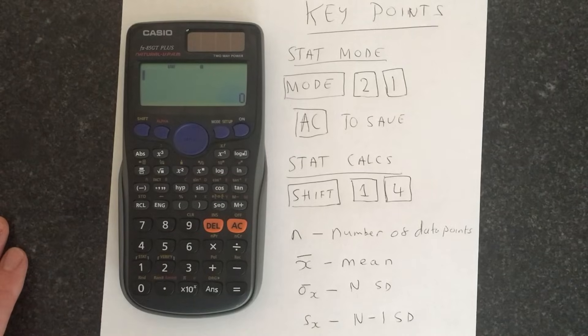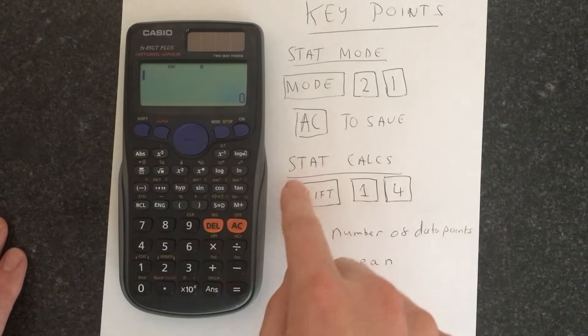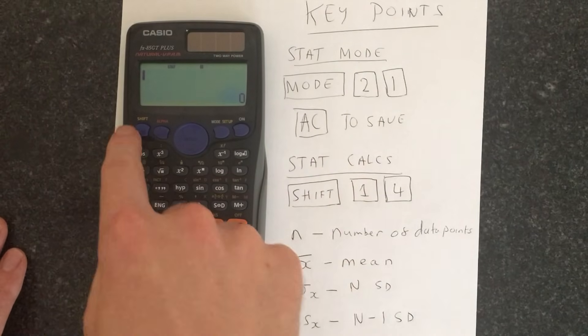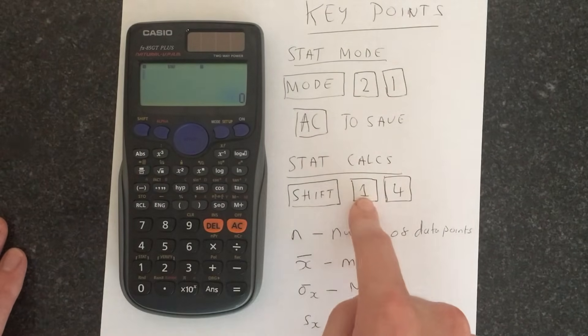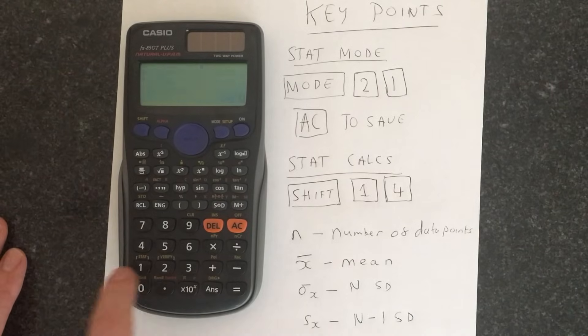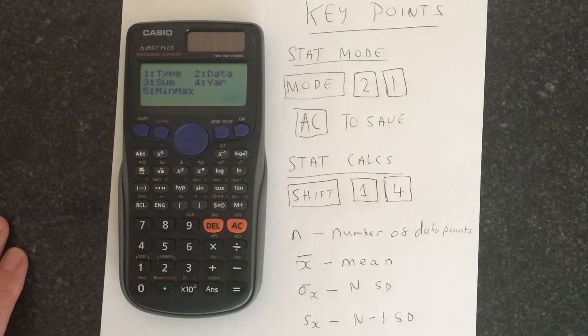You then need to tell the calculator what you want to do, so you press SHIFT and then you go into 1 which takes you into STAT here. This gives you all the different STAT functions.